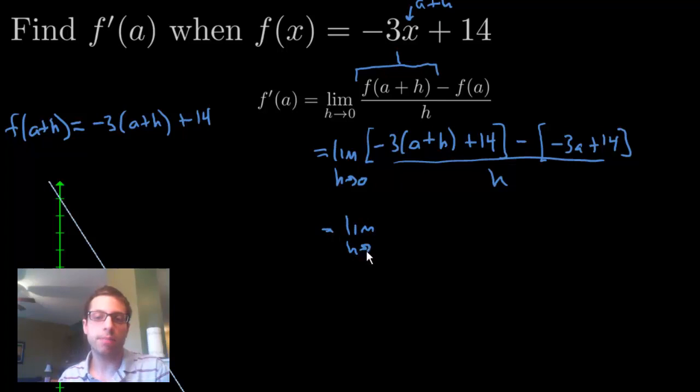Now, we do got to clean up the top. So, that means distribute this -3 in, as well as this negative over here. So, we're going to get -3a - 3h + 14, plus 3a - 14, all over h.